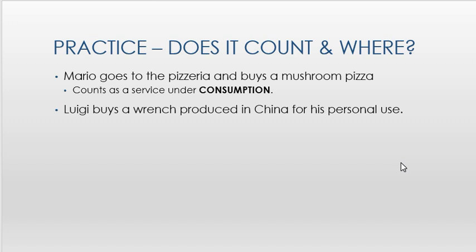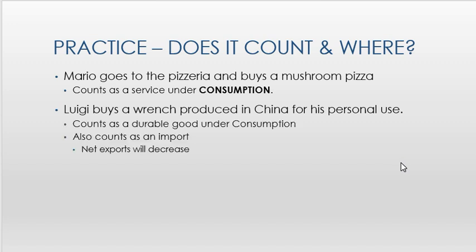Luigi buys a wrench produced in China for his personal use. Since he's buying it for personal use, that's a household purchase, so it's consumption. But it's also purchased from another country, so it's also an import. A wrench counts as a durable good because we expect it to last three years or more, and then again as an import.